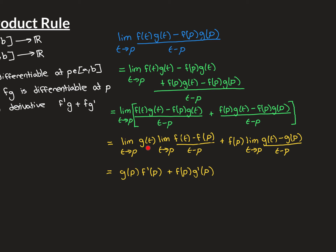We've now made a big step forward. I claim that this expression is equivalent to our target. First, let me convince you that the limits this expression is made up of are all going to exist. Let's look at the limit as t approaches p of g(t). That is going to exist, and indeed it's going to be equal to g(p), because we know g is continuous at p, and we know that because it's differentiable at p, and differentiability implies continuity.